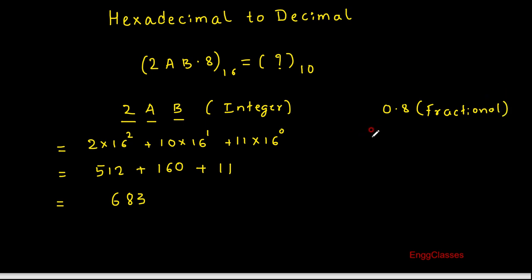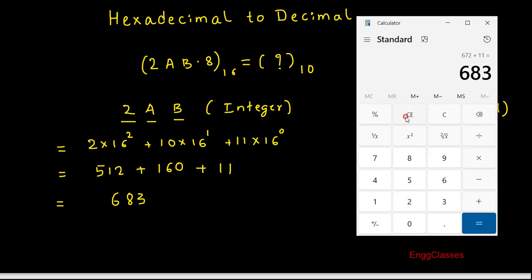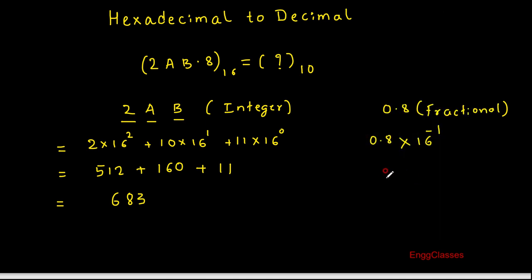For the fractional part, I consider 0.8 into 16 to the power minus 1. To the right of the decimal point, positions carry negative powers of 16. So 0.8 into 16 to the power minus 1 is the same as 0.8 divided by 16, which gives 0.05.